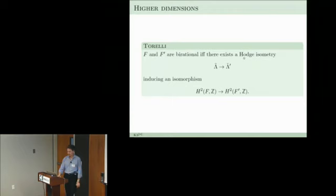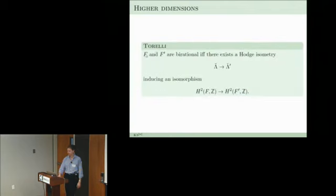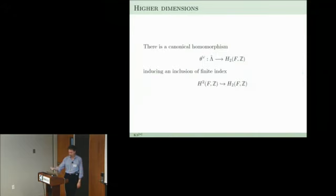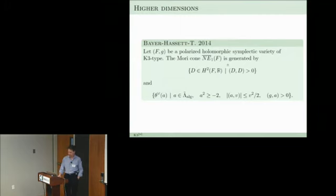In the background there is a Torelli theorem: if you have a Hodge isometry of these extended lattices inducing an isomorphism on the H^2 of the K3 surfaces, then in fact the varieties F and F' are birational holomorphic symplectic varieties. There is this extended lattice with a canonical homomorphism down to H_2, H^2 embeds into H_2, and we have these pairings. The Mori cone of effective curves is generated by classes of positive square and images in this theta-dual of algebraic (1,1)-classes in the extended lattice with square equal to minus 2, which intersect the distinguished vector v positively and are positive on the polarization.